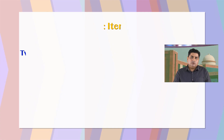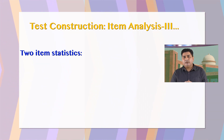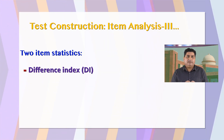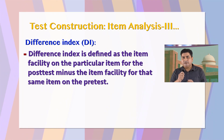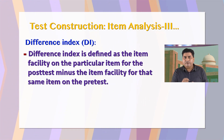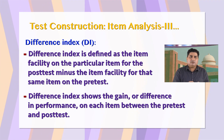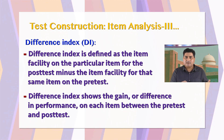According to Brown, two item statistics are often used in the item analysis of such criterion reference tests. Number one, the difference index or DI. Number two, the B index or BI. The difference index or DI is defined as the item facility on the particular item for the post-test minus the item facility for the same item on the pre-test. In other words, the difference index shows the gain or difference in performance on each item between the pre-test and post-test.